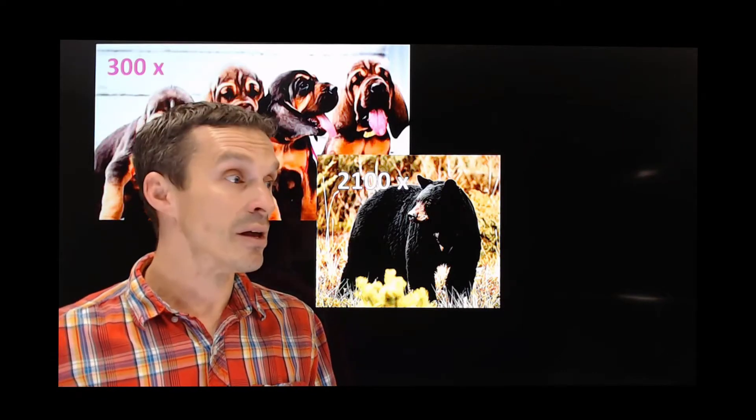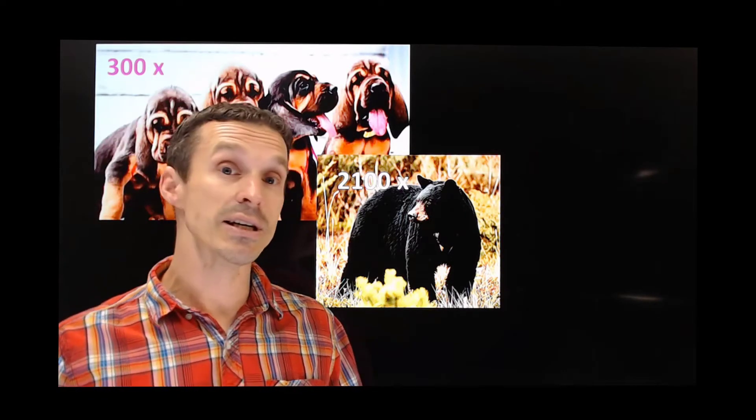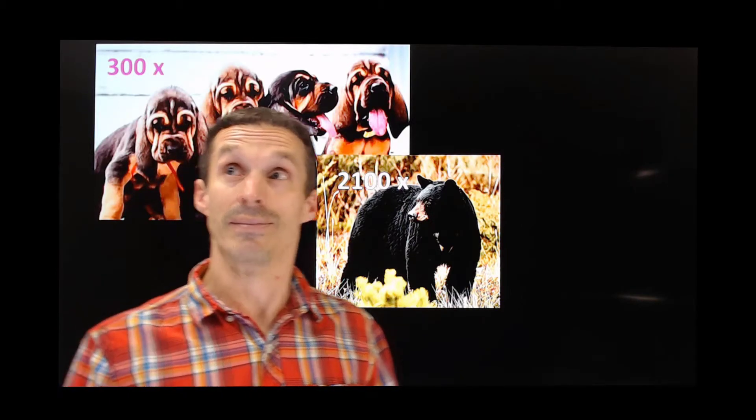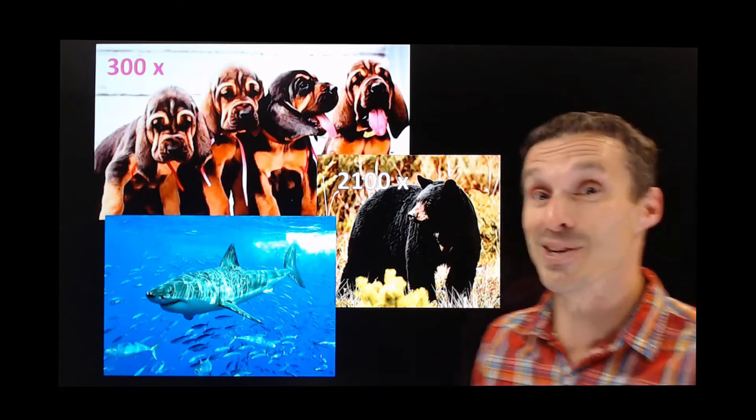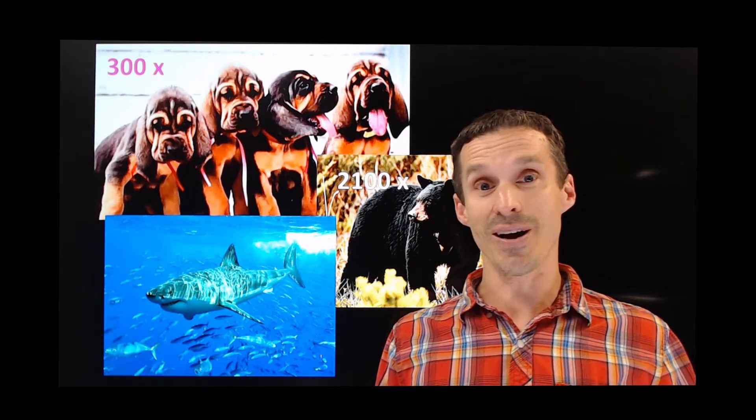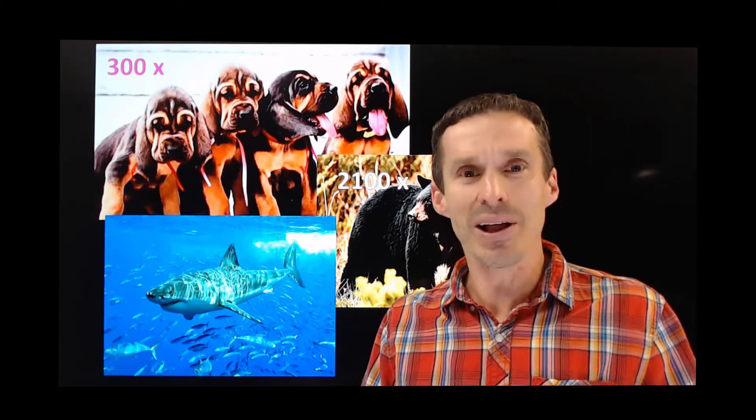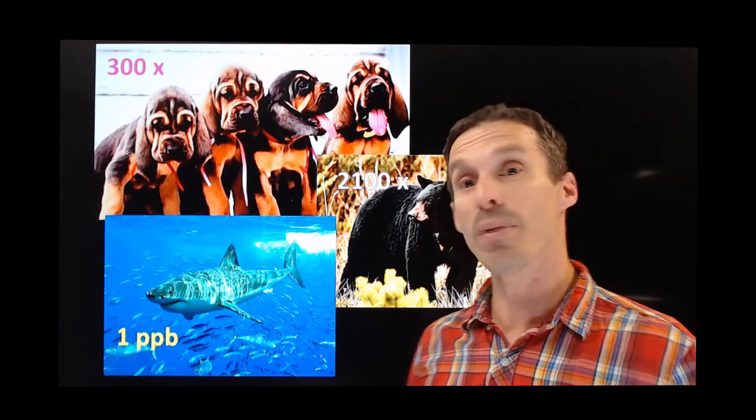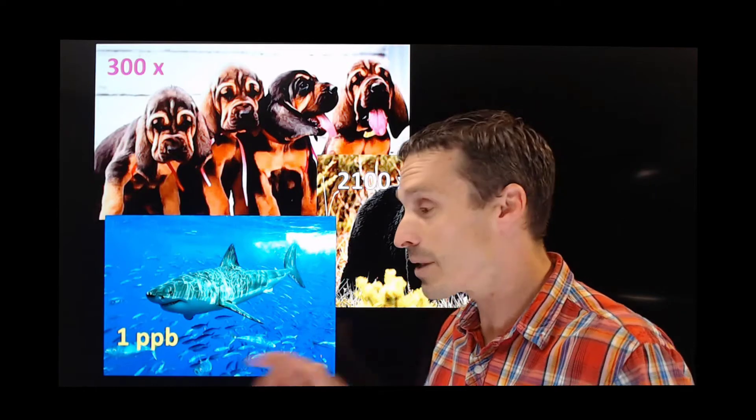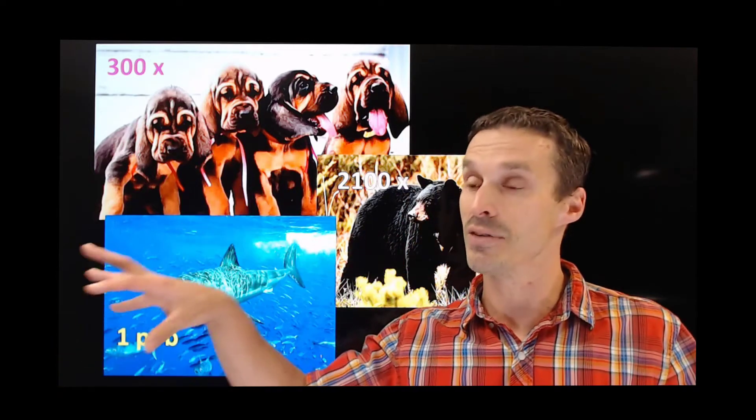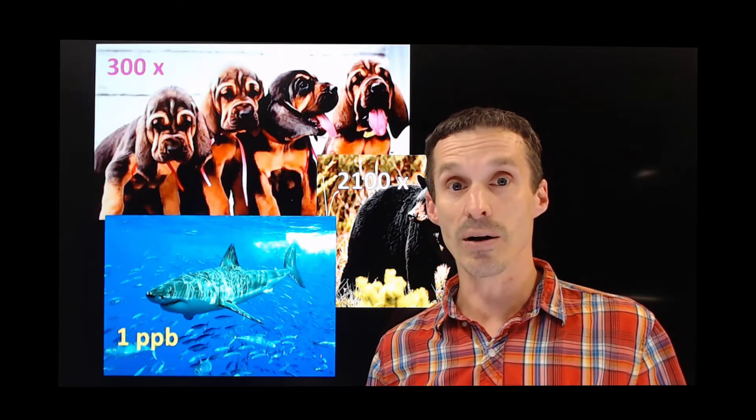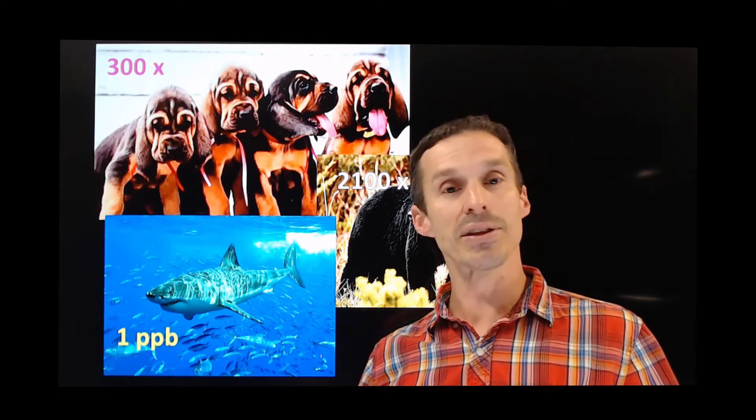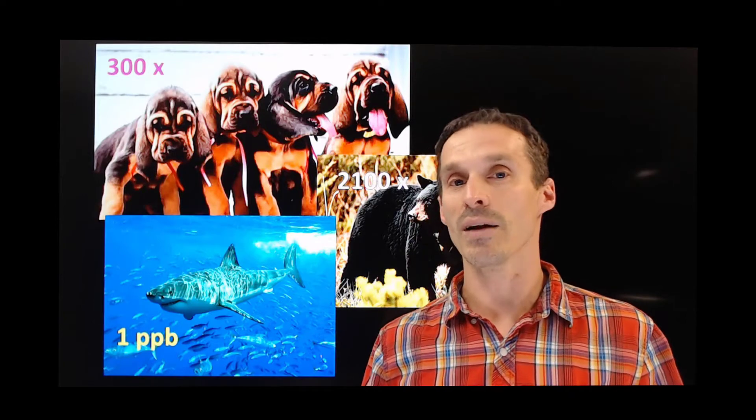I guess this begs the question now: which animal has the keenest sense of smell? Maybe it could be a shark. We know that a shark can sense blood in the water around them at really low concentrations, at one part per billion, just by sensing the chemicals at very low levels. That's a really remarkable level, but in fact that is nowhere near the limit of sensitivity in the animal kingdom.